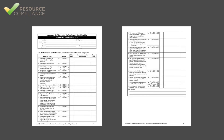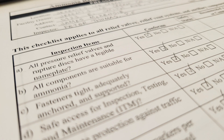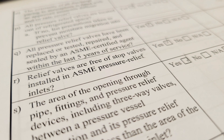Unlike most other inspection checklists, after completing the contact information section, the Pressure Relief System Checklist jumps right into the inspection questions. The checklist has a total of 23 questions that should be answered yes, no, or not applicable. Wording of each question is such that a yes answer is always positive and a no answer indicates a deficiency.